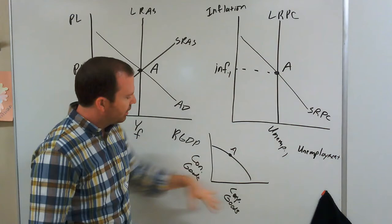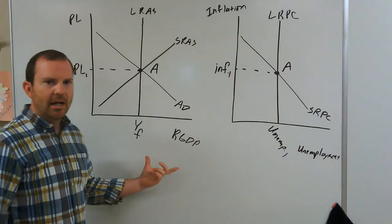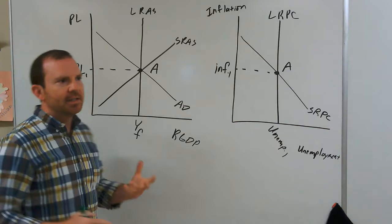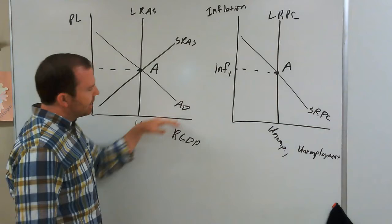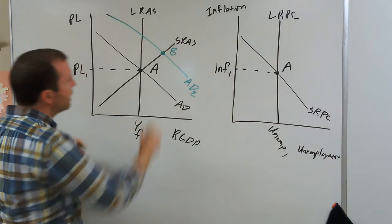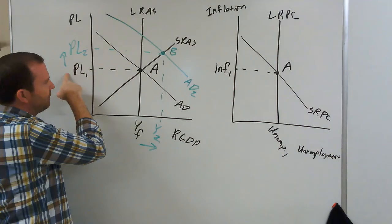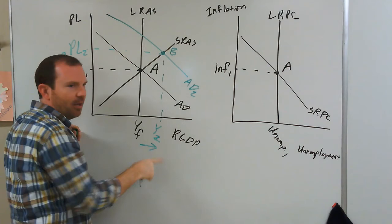So what happens when we get out of long-run equilibrium? Let's say interest rates decrease. If interest rates decrease, then consumption and investment will rise, and as a result aggregate demand will rise — AD shifts to the right. Now we're at equilibrium point B, at a higher output and a higher price level. Our price level's gone up, so inflation has increased. Our output has gone up, so unemployment has gone down. So inflation is up and unemployment is down.